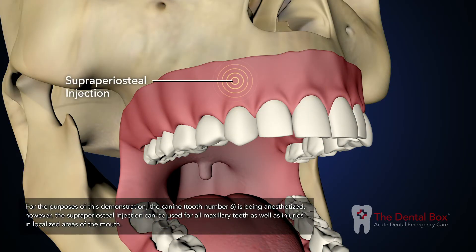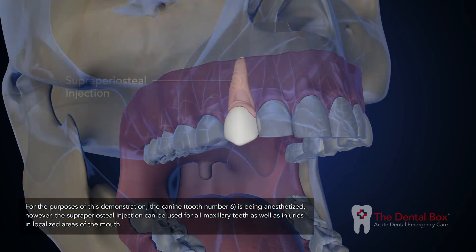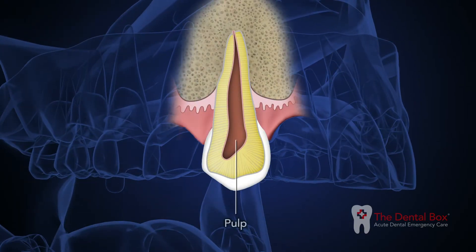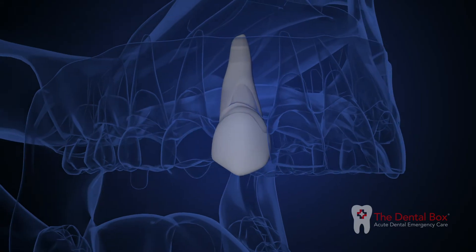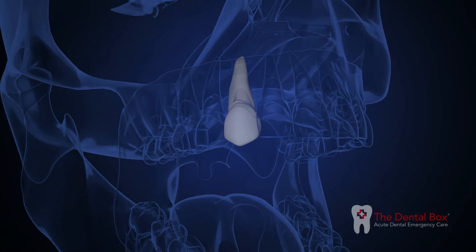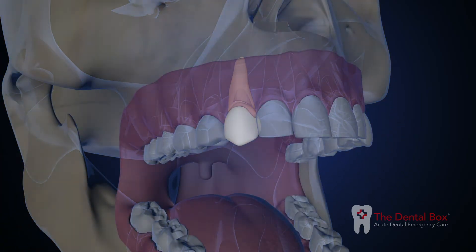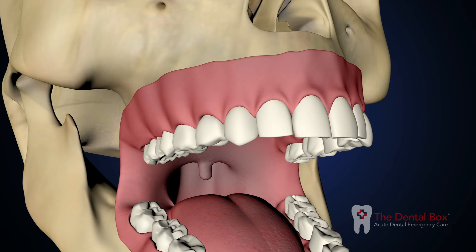The supraperiosteal injection provides anesthesia to the immediate injection site, including the pulp and root of the tooth, buccal periosteum, connective tissue, and mucous membrane. It is not indicated for profound tooth and pulpal anesthesia of mandibular molars, though it is adequate for soft tissue anesthesia.